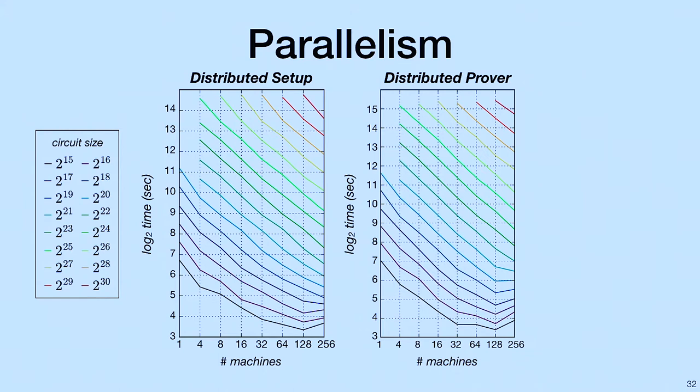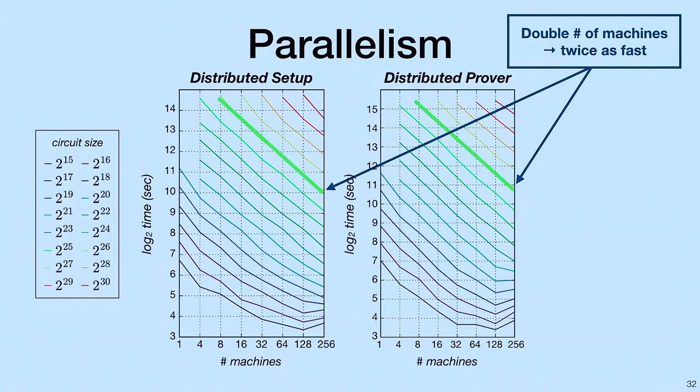We also evaluated this for parallelism. Here, we plot the same data again, but show the number of machines on the x-axis, and we plot the circuit sizes. On the left, again, is the distributed setup, and on the right is the distributed prover. If we take a look at this line 2 to the 26, notice that the pattern we see is that as we double the number of machines, these operations run twice as fast.